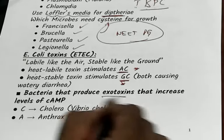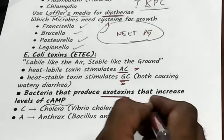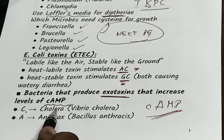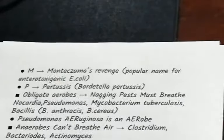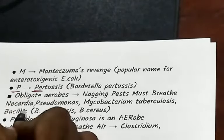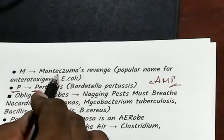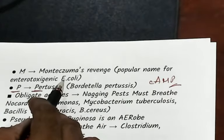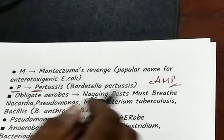Which bacteria produce exotoxins that increase cyclic AMP? Use the mnemonic CAMP: C is Cholera — it raises cyclic AMP. A is Anthrax — it raises cyclic AMP. P is Pertussis. M — there is a condition called Montezuma's Revenge, the popular name for enterotoxigenic E. coli in the West. So enterotoxigenic E. coli also raises cyclic AMP.